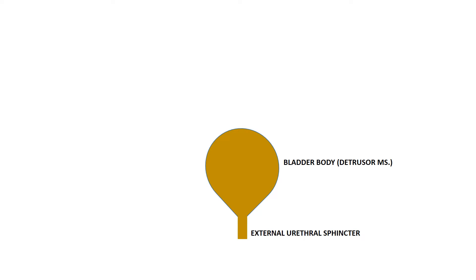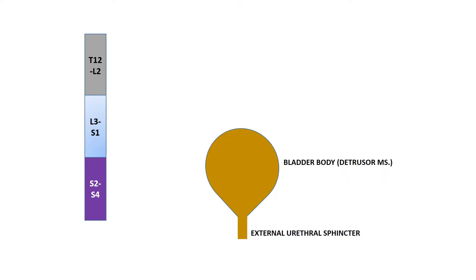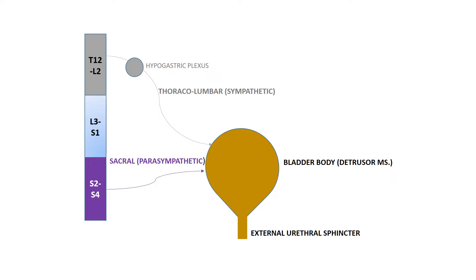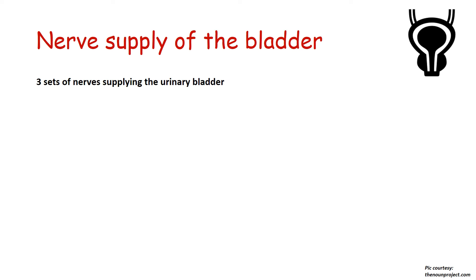This is the bladder body, which is formed by the detrusor muscle, and then there is the external urethral sphincter. The spinal cord segments T12 to L2 and S2 to S4 mainly supply the bladder. Sympathetic is the thoracolumbar outflow, so the sympathetic supply to the bladder is from T12 to L2 via the hypogastric plexus. The parasympathetic supply is via the craniosacral route — in the case of the bladder it is by the sacral nerves via the vesical plexus located close to the bladder. The somatic nerve supplying part of the urinary bladder is the pudendal nerve, which supplies only the external urethral sphincter.